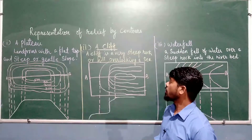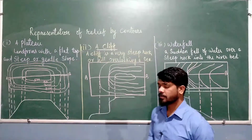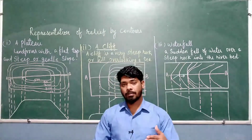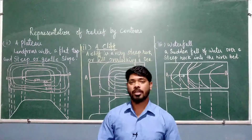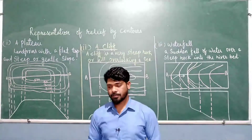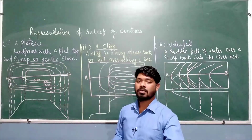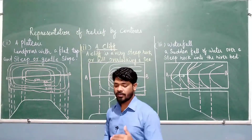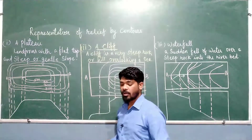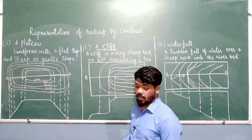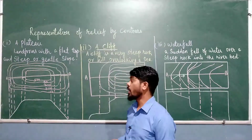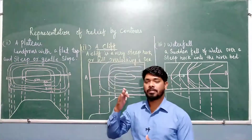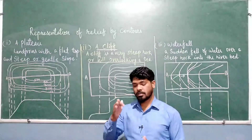The next relief feature is a cliff. A cliff is a very steep rock or hill overlooking a sea — it is close to coastal areas where there is an abrupt end of the mountain and then the sea or ocean begins. A high mountain faces water on one side. A cliff is represented by a sudden merging of several contours — when there is a merging of several contours you understand that an abrupt steep slope is present.